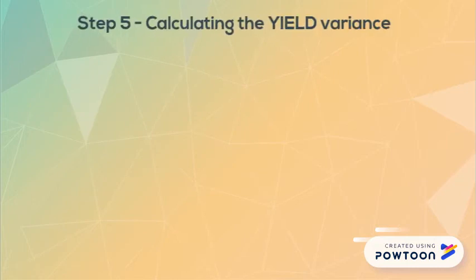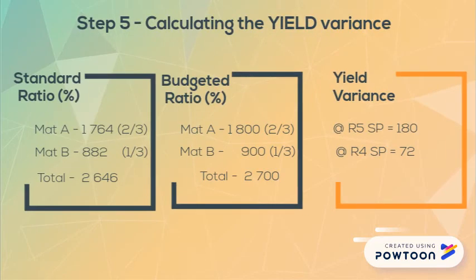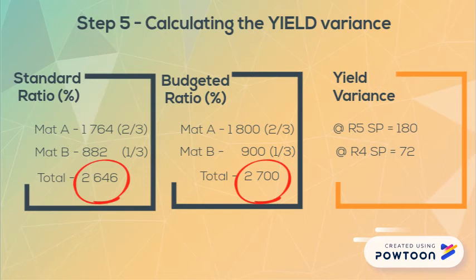For our yield variance we will be comparing the standard usage with the budgeted ratio usage. This gives us different amounts of kilograms in total as we are applying it to a budgeted flexed amount of units, but we are still using the exact same ratio, which gives us our two yield variances for materials A and B.